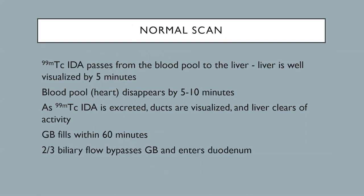In a normal scan, the radiotracer passes from the blood pool to the liver, so the liver is well visualized by 5 minutes. Activity should be cleared from the heart by 5 to 10 minutes. Activity is then excreted into the bile ducts, which should be well visualized, and the liver clears of activity. Approximately two-thirds goes to the duodenum and about one-third is stored in the gallbladder.